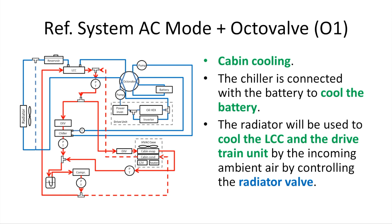This slide shows the mode when the refrigerant system is at AC mode and the octa valve is at O1. This enables cabin cooling by the cabin evaporator, the chiller is connected with the battery to cool the battery, and the radiator is used to cool the drivetrain unit.